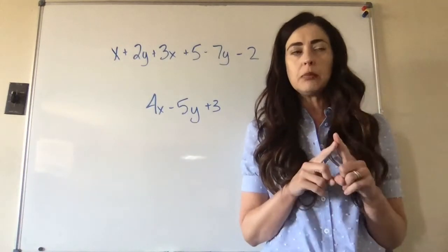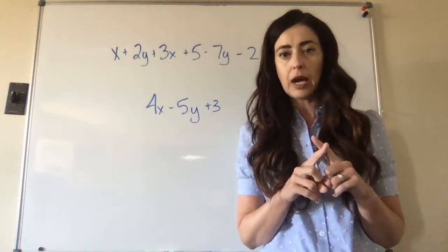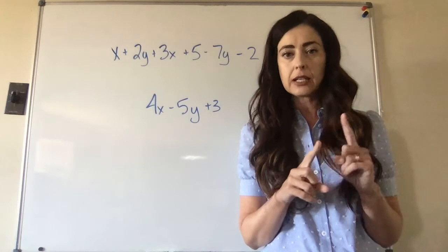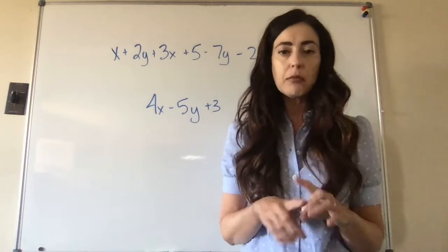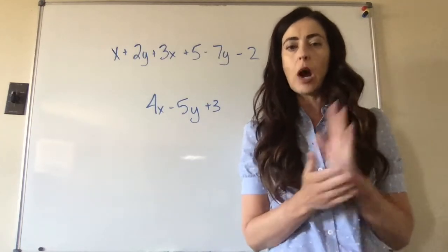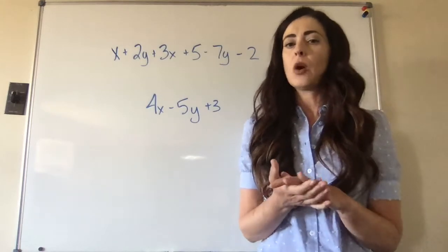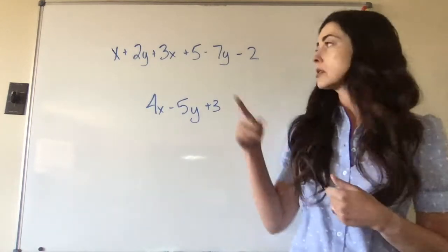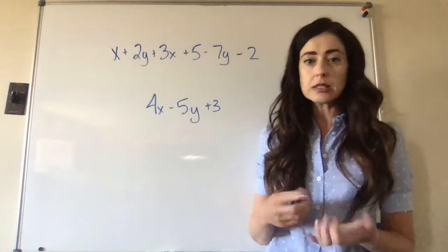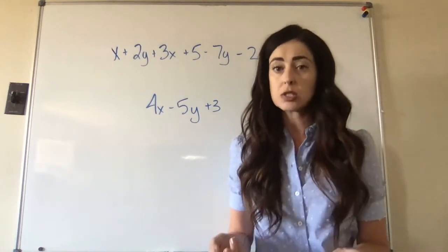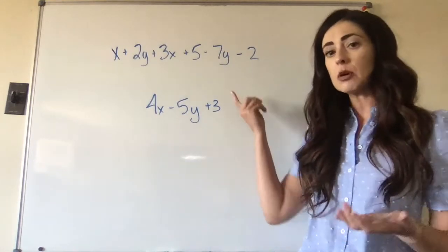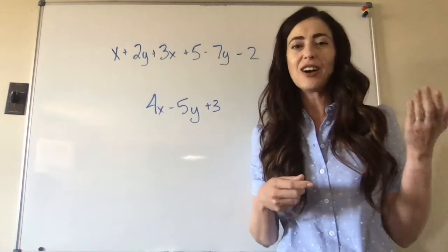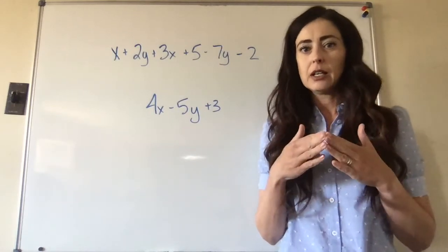Terms can only be combined or simplified with other like terms. So what that means is x's can only be added with x's, y's can only be added with y's, and then whole numbers can only be added with whole numbers. So these whole numbers we call constants, but they're also still terms. So just a number by itself can be called a constant or a term. Both apply.